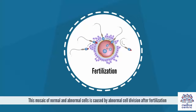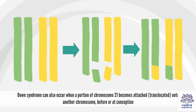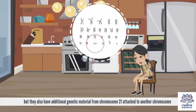Translocation Down syndrome: Down syndrome can also occur when a portion of chromosome 21 becomes attached, or translocated, onto another chromosome before or at conception. These children have the usual two copies of chromosome 21, but they also have additional genetic material from chromosome 21 attached to another chromosome.